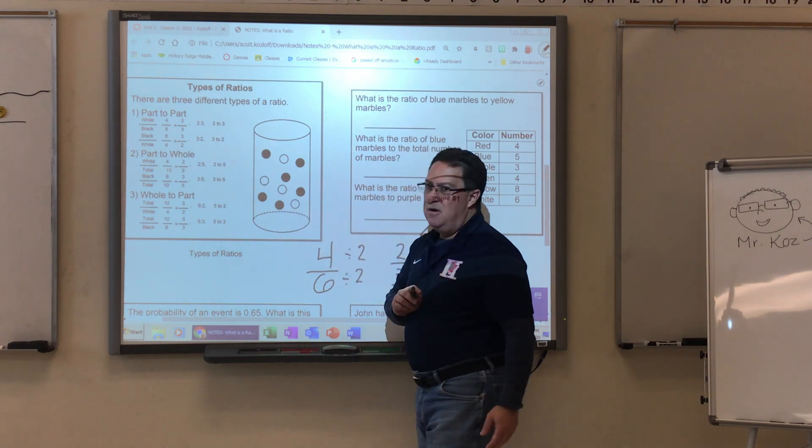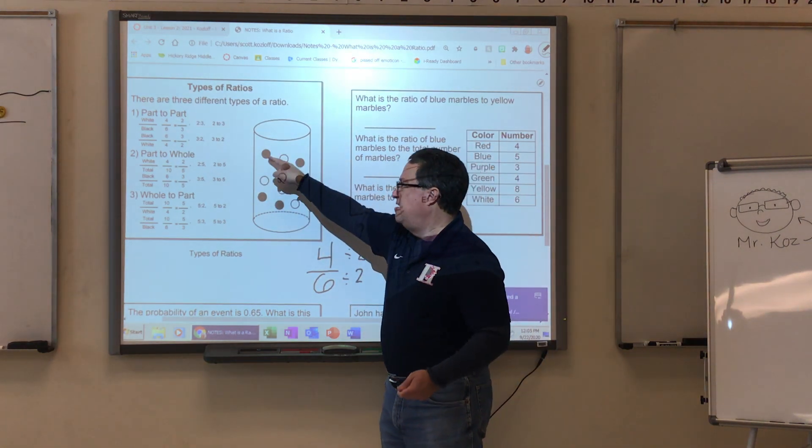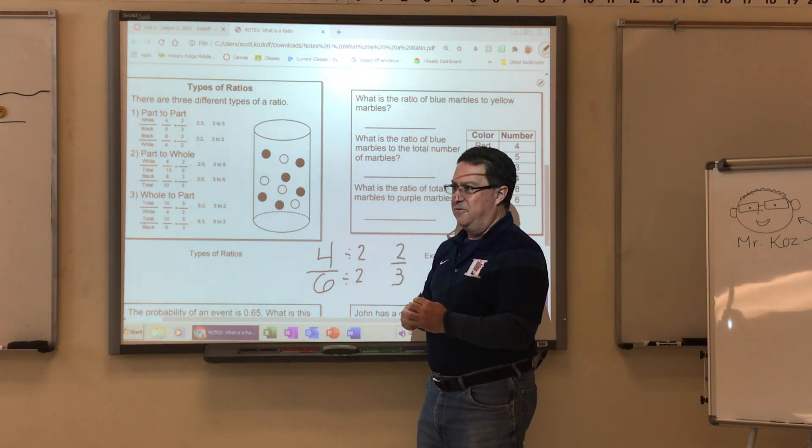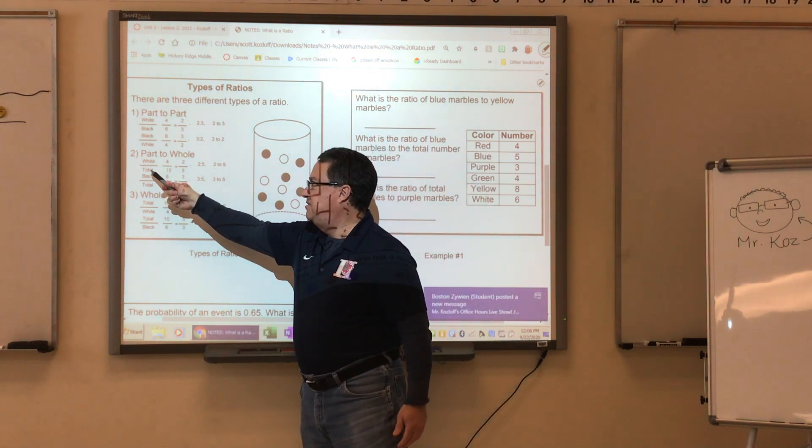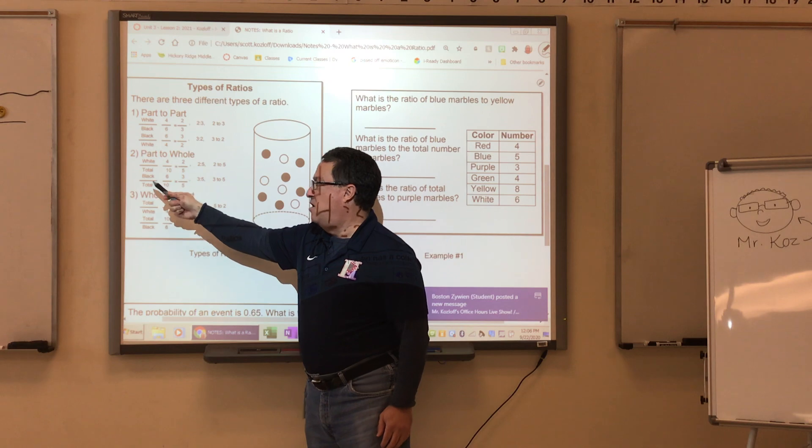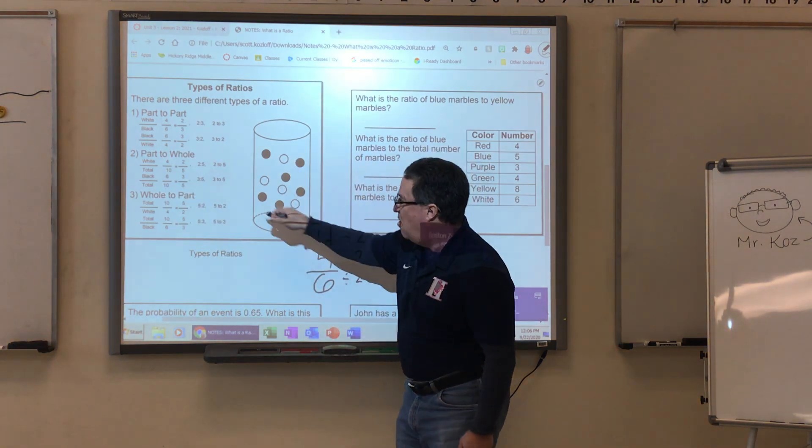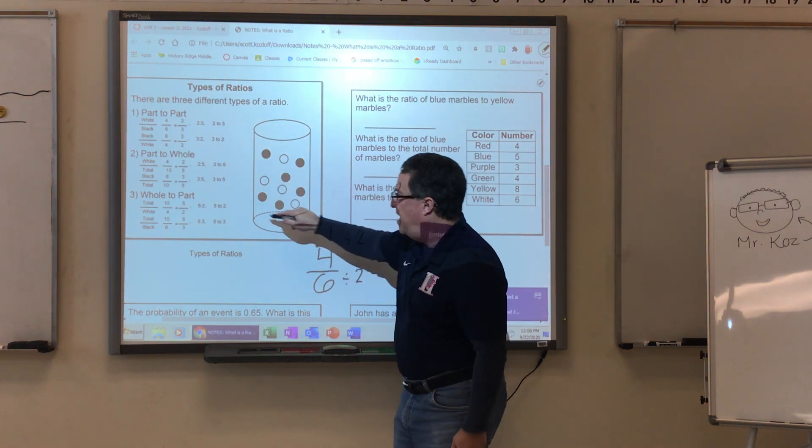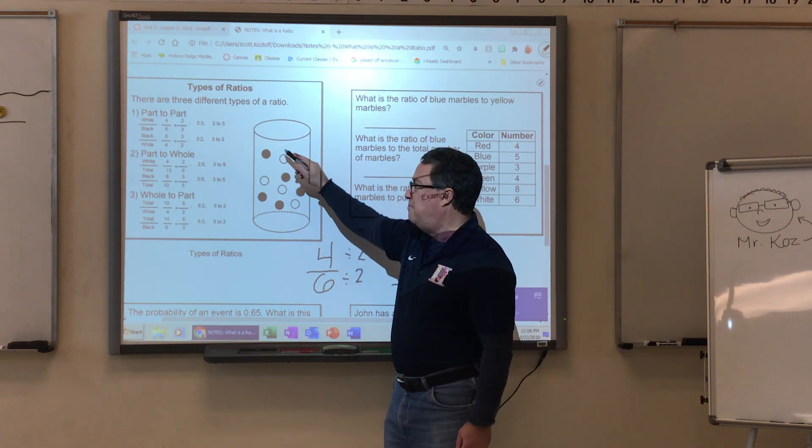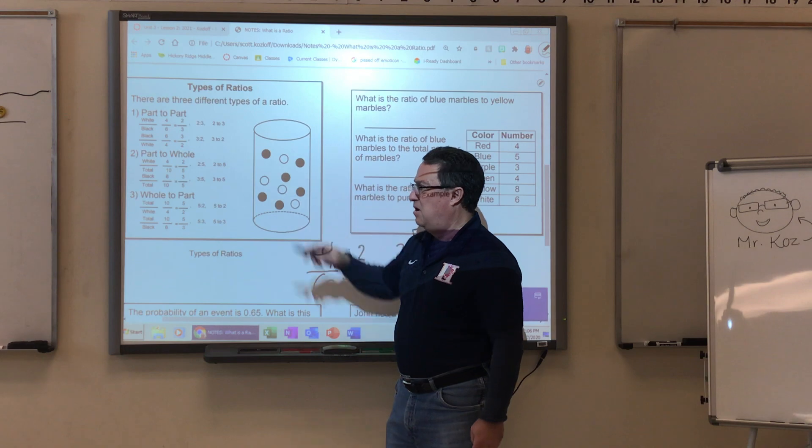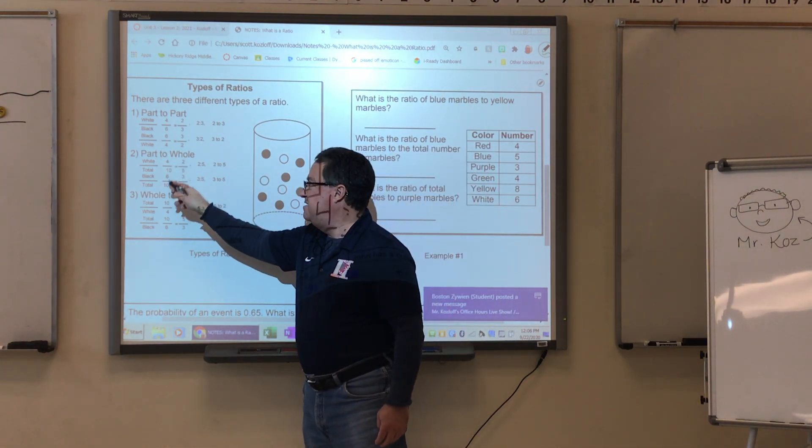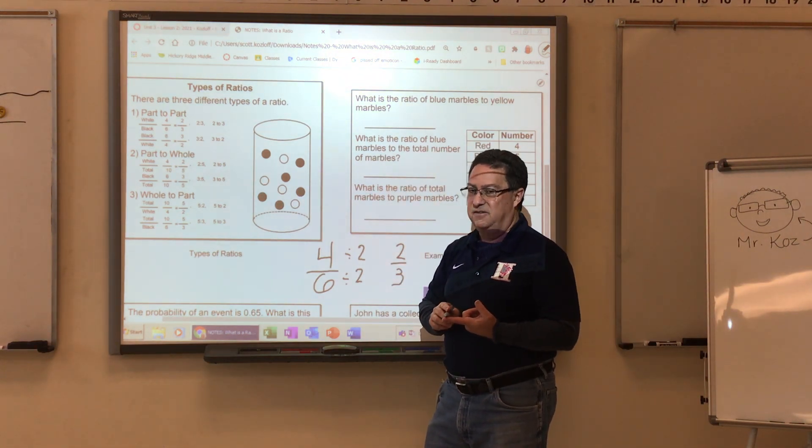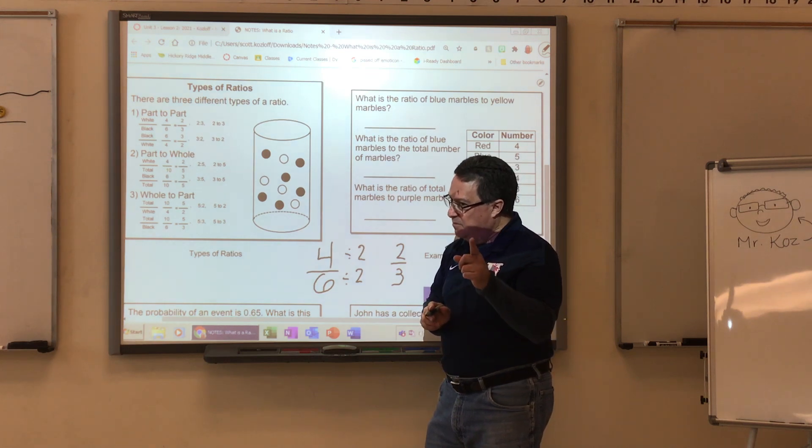Next we have part to whole. Part to whole means what part of this container is a ratio with the whole container. So in other words, it's the white marbles to the total marbles or the black marbles to the total marbles. When I count all of them, that's the total. So there are 4 white marbles to 10 total marbles. There are 6 black marbles to 10 total marbles. Once again, both of these ratios can be simplified. The only correct answer is a simplified answer. Please remember that.